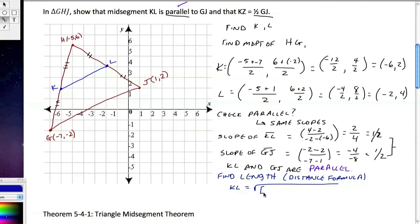So we're going to have negative 2 minus negative 6 squared, plus 4 minus 2 squared. Which is going to give us square root of 4 squared plus 2 squared, which is equal to square root of 16 plus 4, which is 20. Which is really equal to square root of 4 times square root of 5, which we know is equal to 2 square root of 5. That's the length of KL.